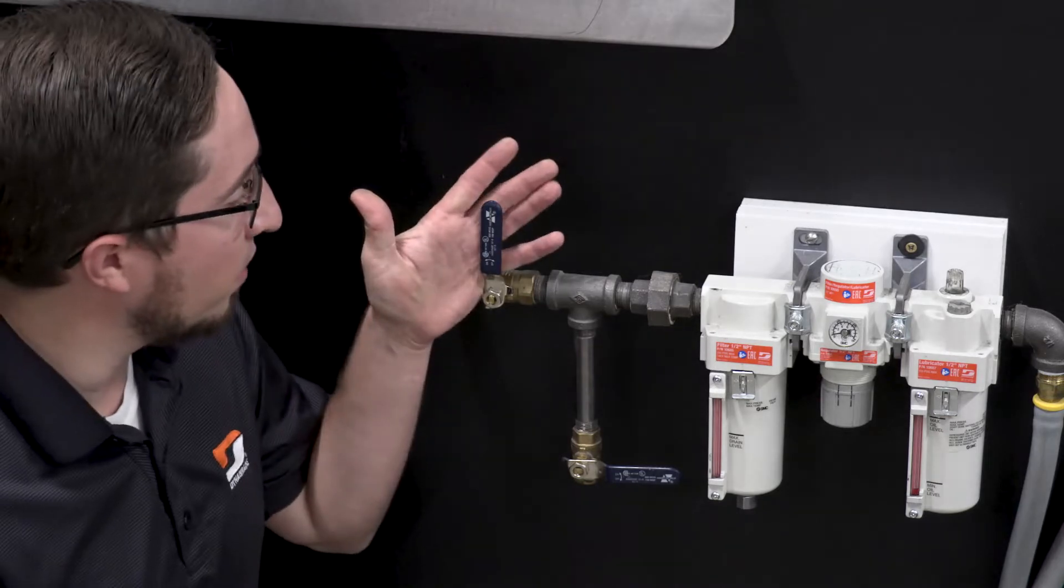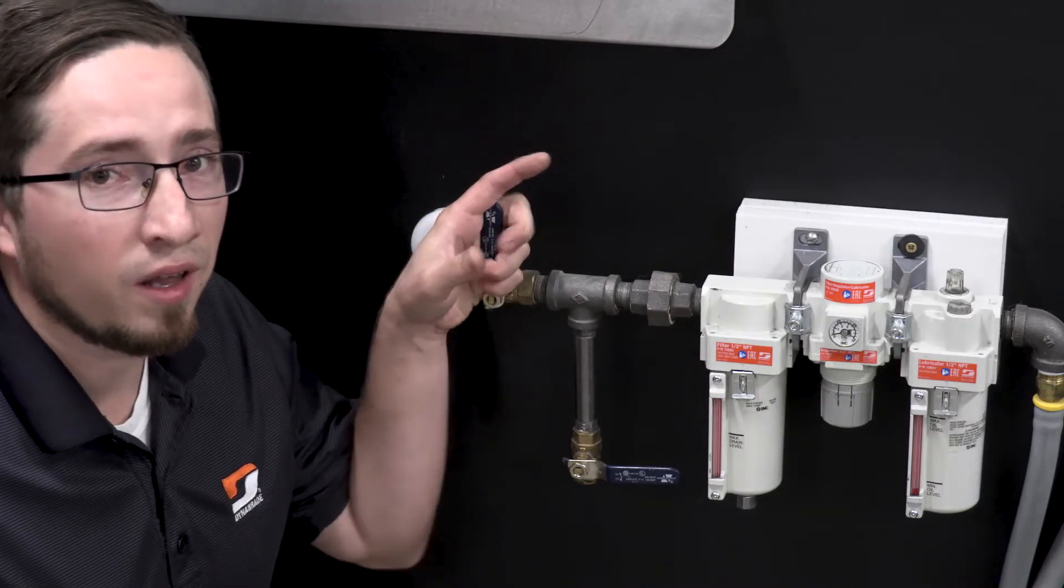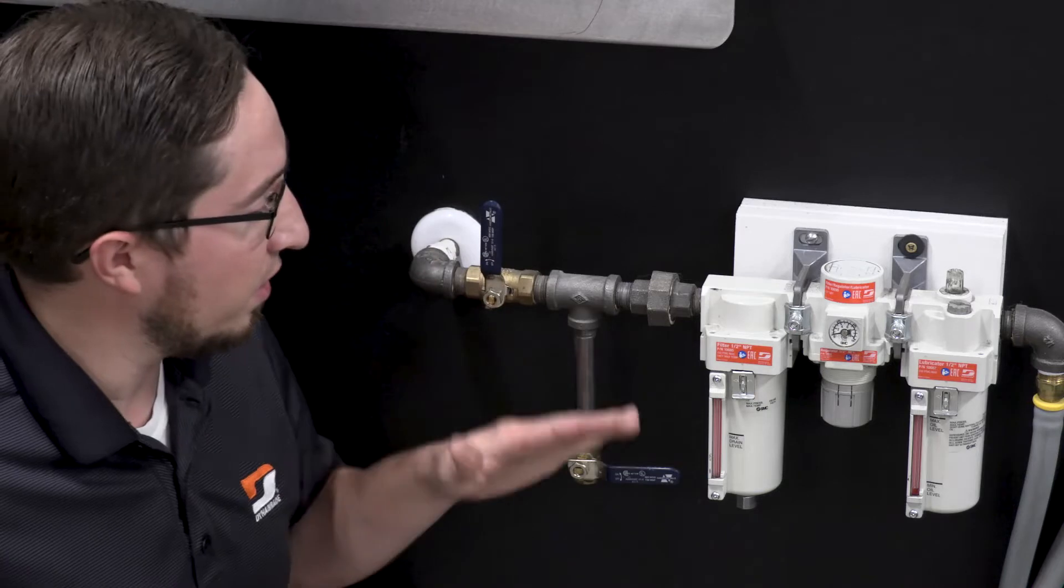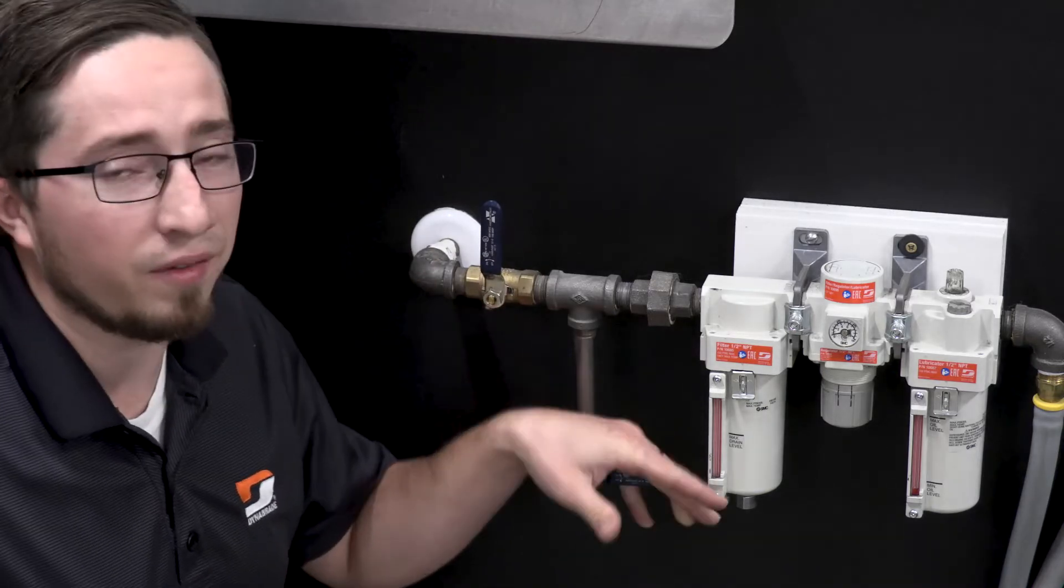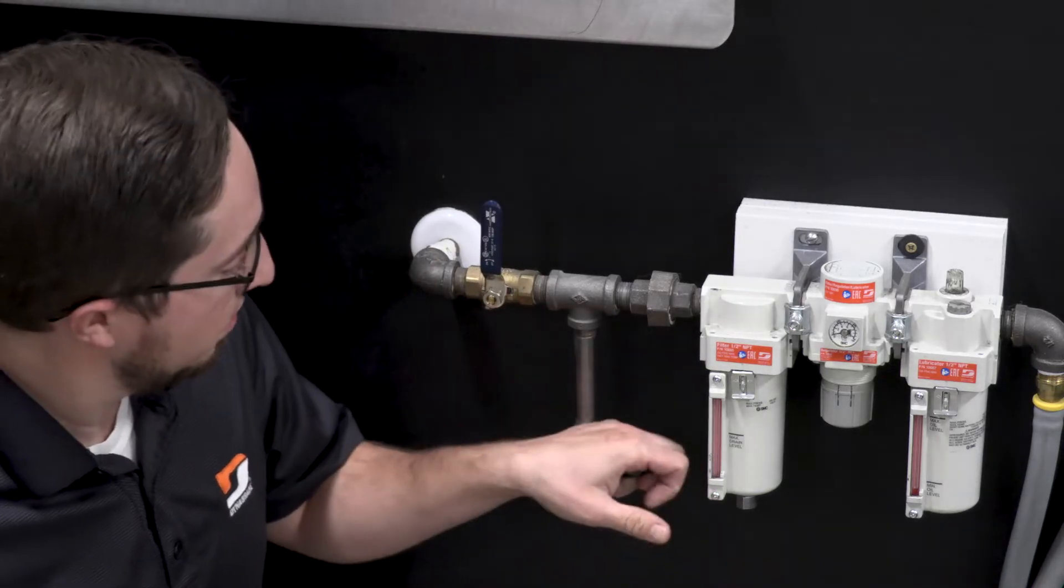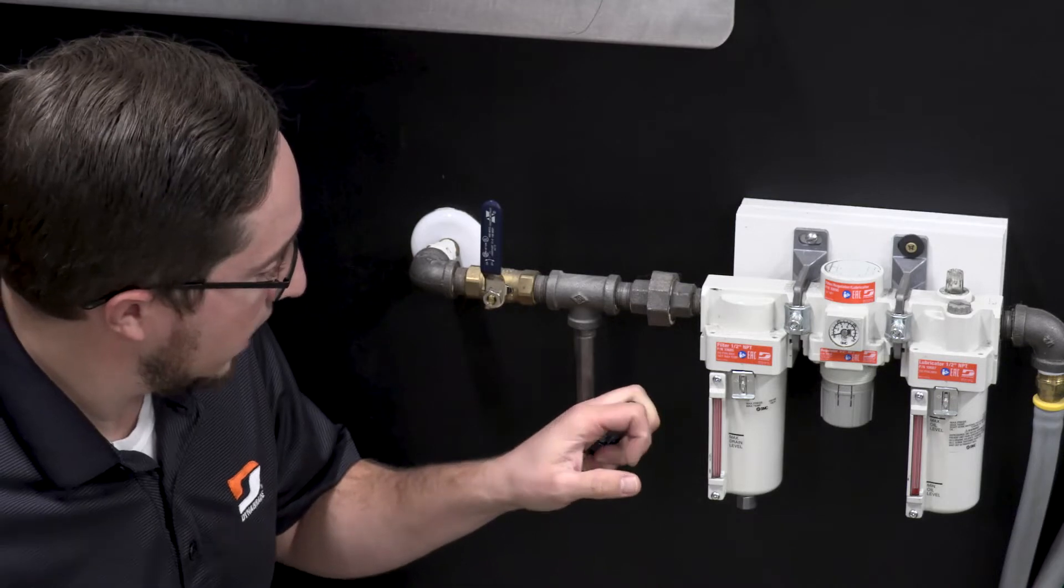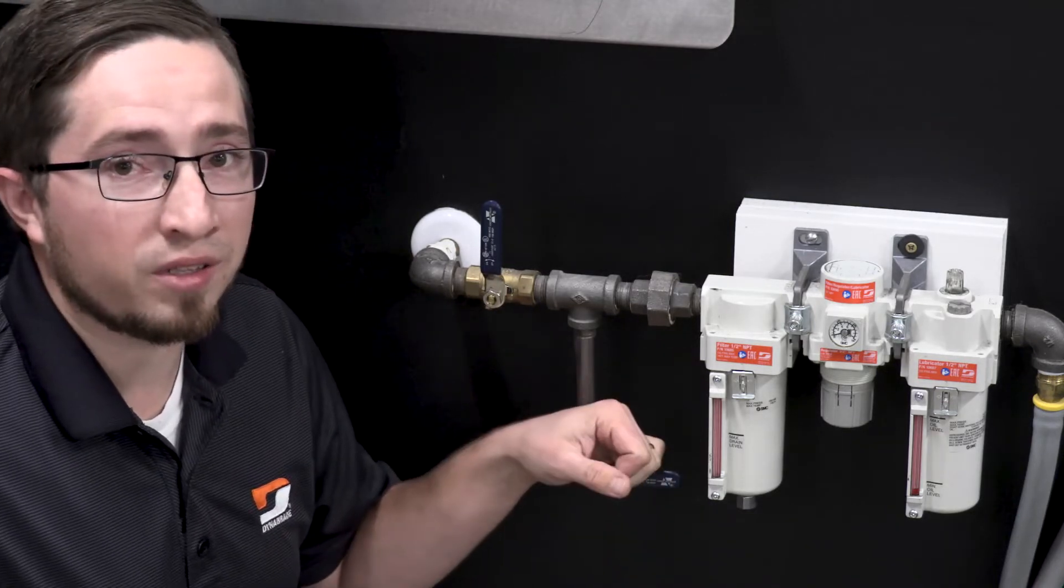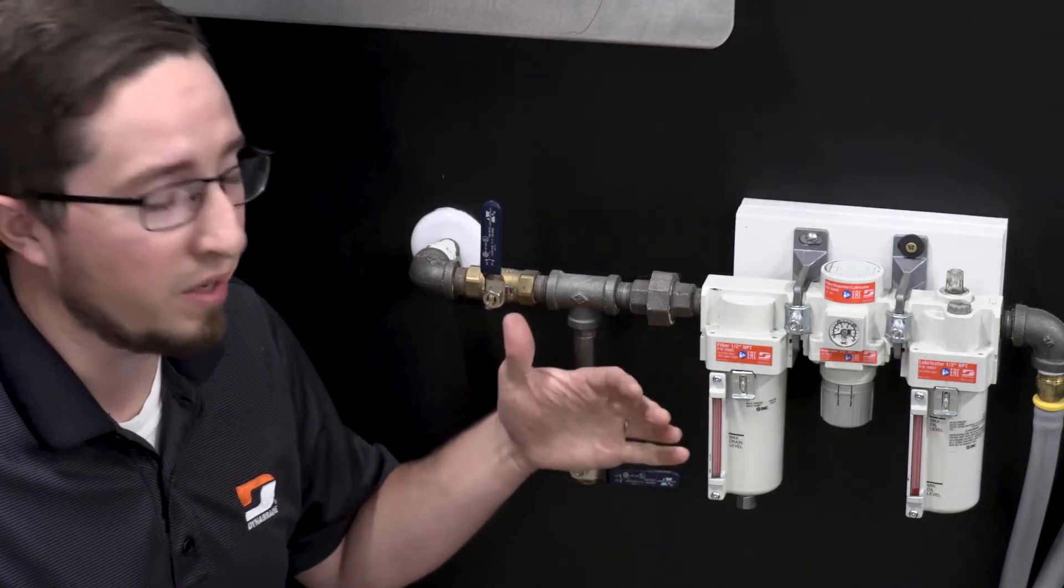First step you're going to want to take is of course shut off your air supply, bleed out your air lines, or if you're already at your FRL here and you have a release valve, release the air. Once you're sure that there's no air being supplied to your FRL, we can now safely maintain it.